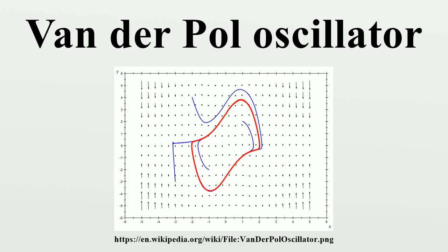Author James Gleick described a vacuum tube Van der Pol oscillator in his book Chaos: Making a New Science. According to a New York Times article, Gleick received a modern electronic Van der Pol oscillator from a reader in 1988.